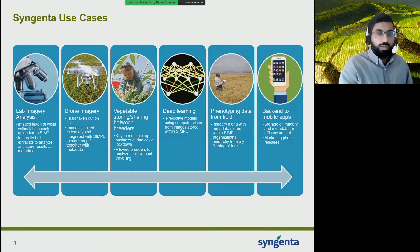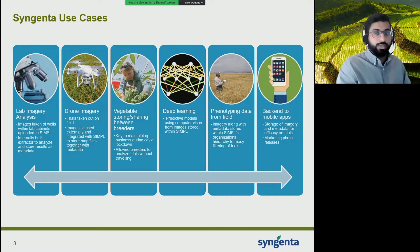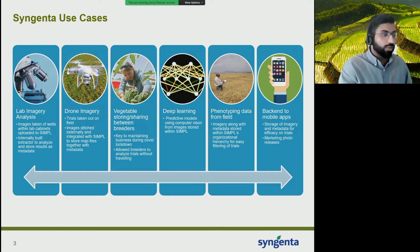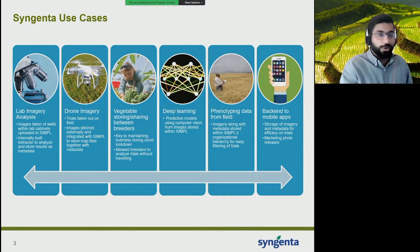Another newer major use case is on our vegetables side in terms of business unit. Last year there was a pause in their business, which didn't allow breeders to travel globally to different sites to analyze different trials. So starting in March of last year, they started using SIMPLE for file sharing needs. Breeders within Syngenta were able to share images and videos across the globe to share their latest trials. This has kind of redefined their business, and even as COVID guidelines continue to ease, they plan on continuing down this route.